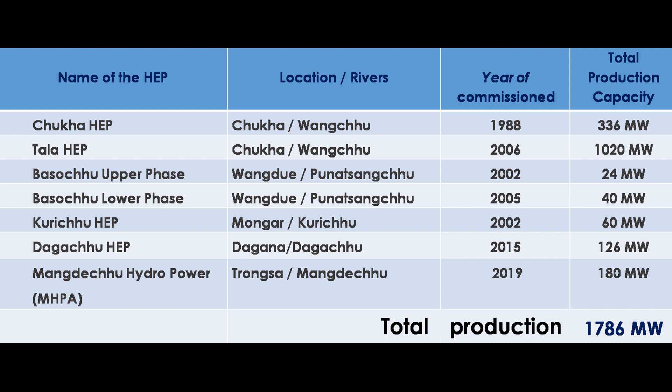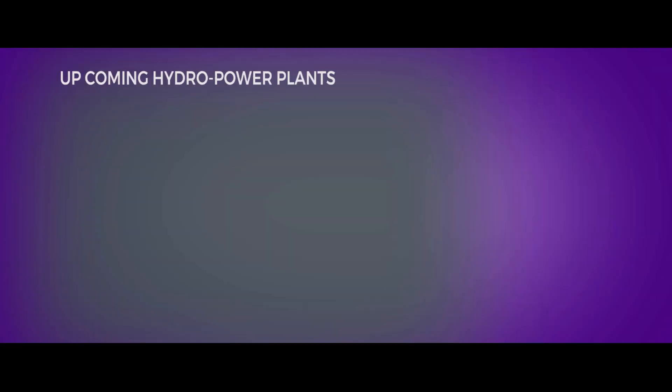We also have upcoming hydropower plants in the country, which can be shown on the map. The first upcoming plant is Kolongchu with a generating capacity of 600 megawatts, located in Tashi Yangtsi.